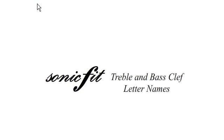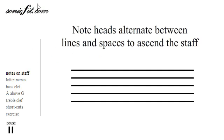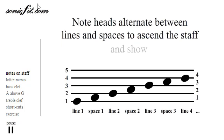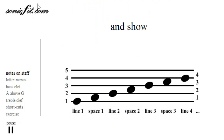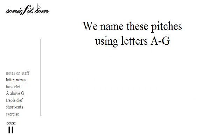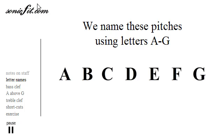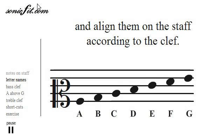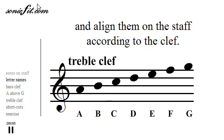Welcome to SonicFit lesson on letter names on the treble and bass clef. The last lesson was on line notes and space notes which alternate to ascend a staff. This allows the notes to show pitch. We identify these pitches using alphabet letter names, A through G, and place those on the staff according to the clef.